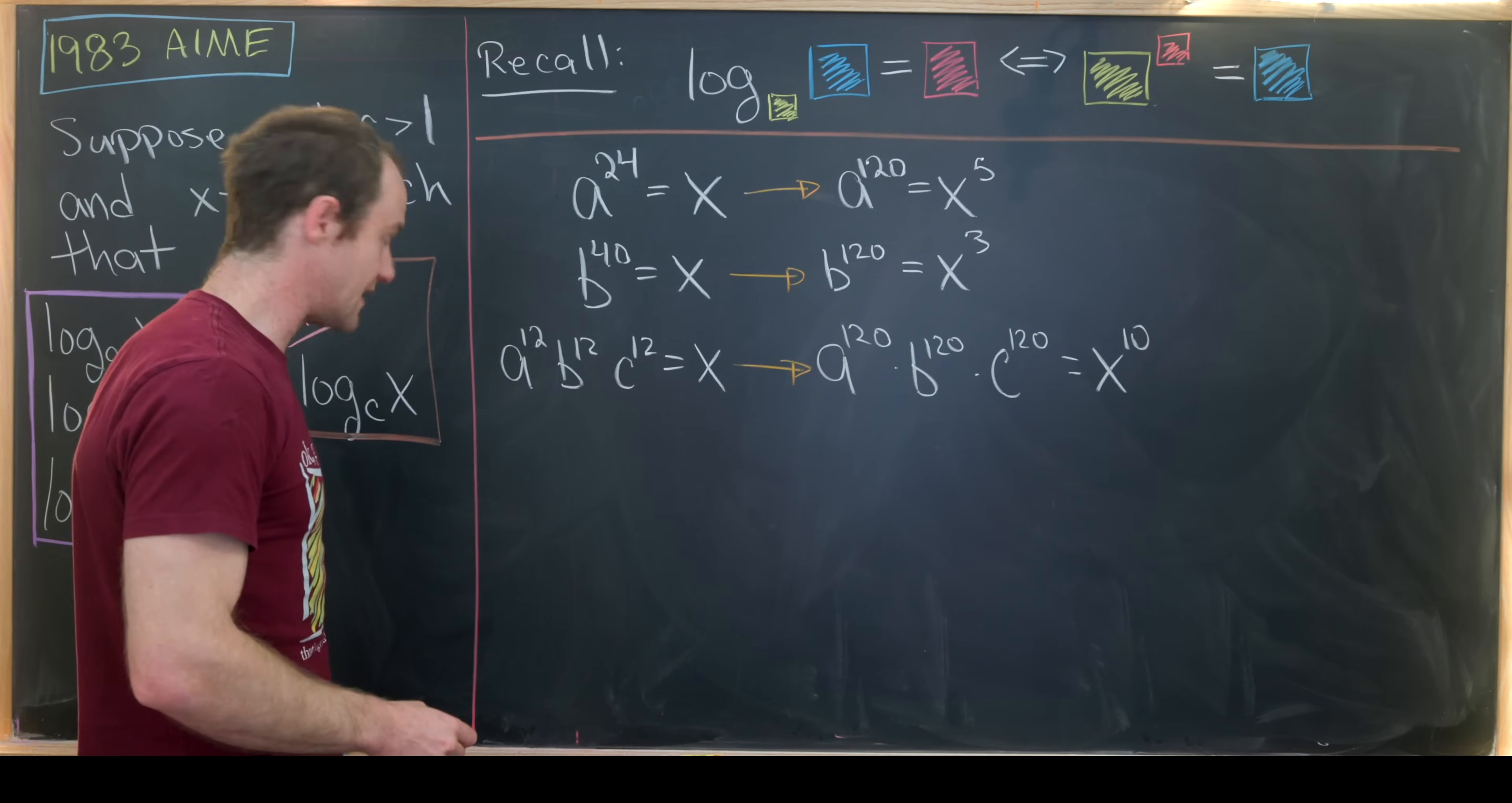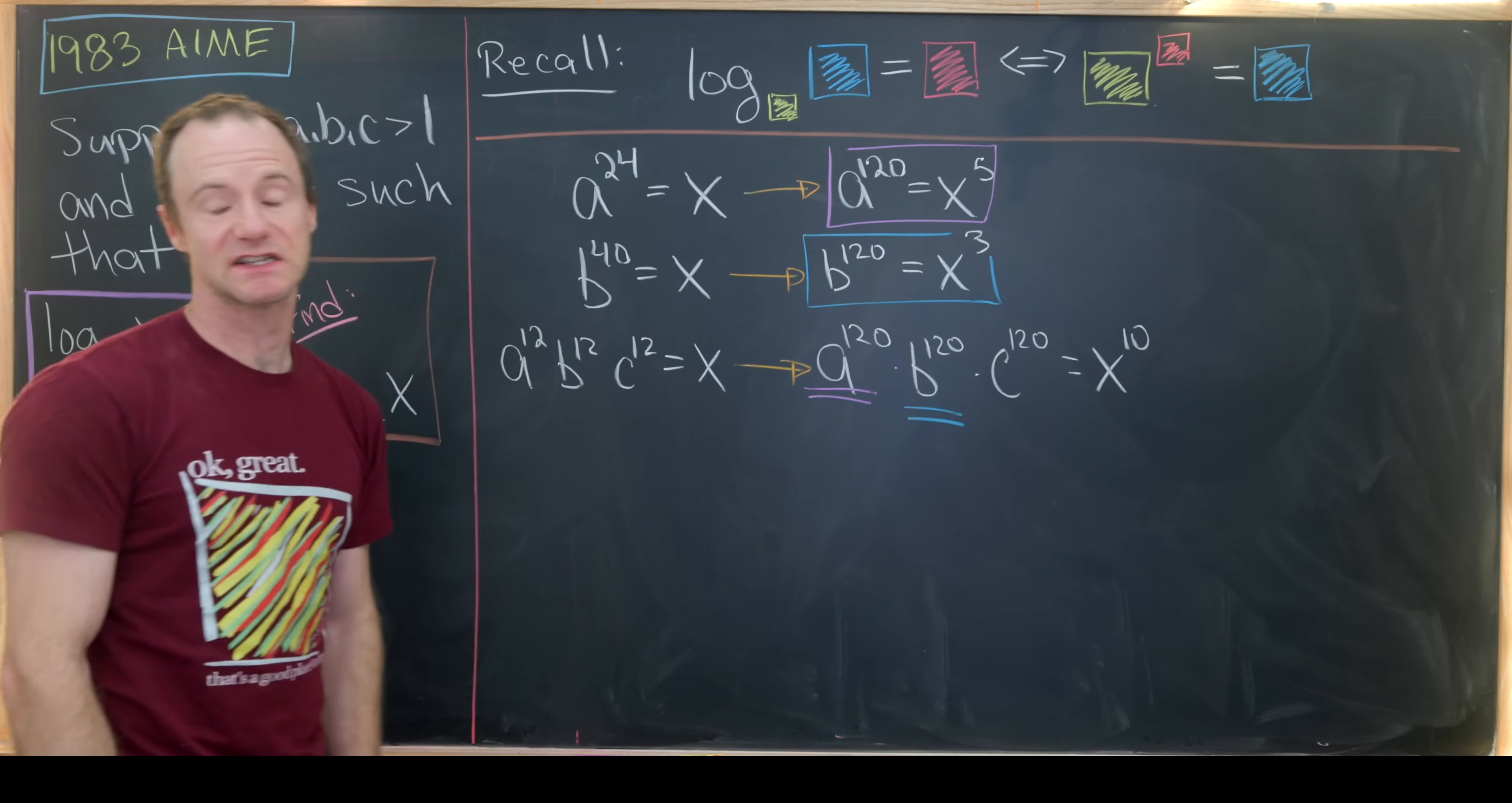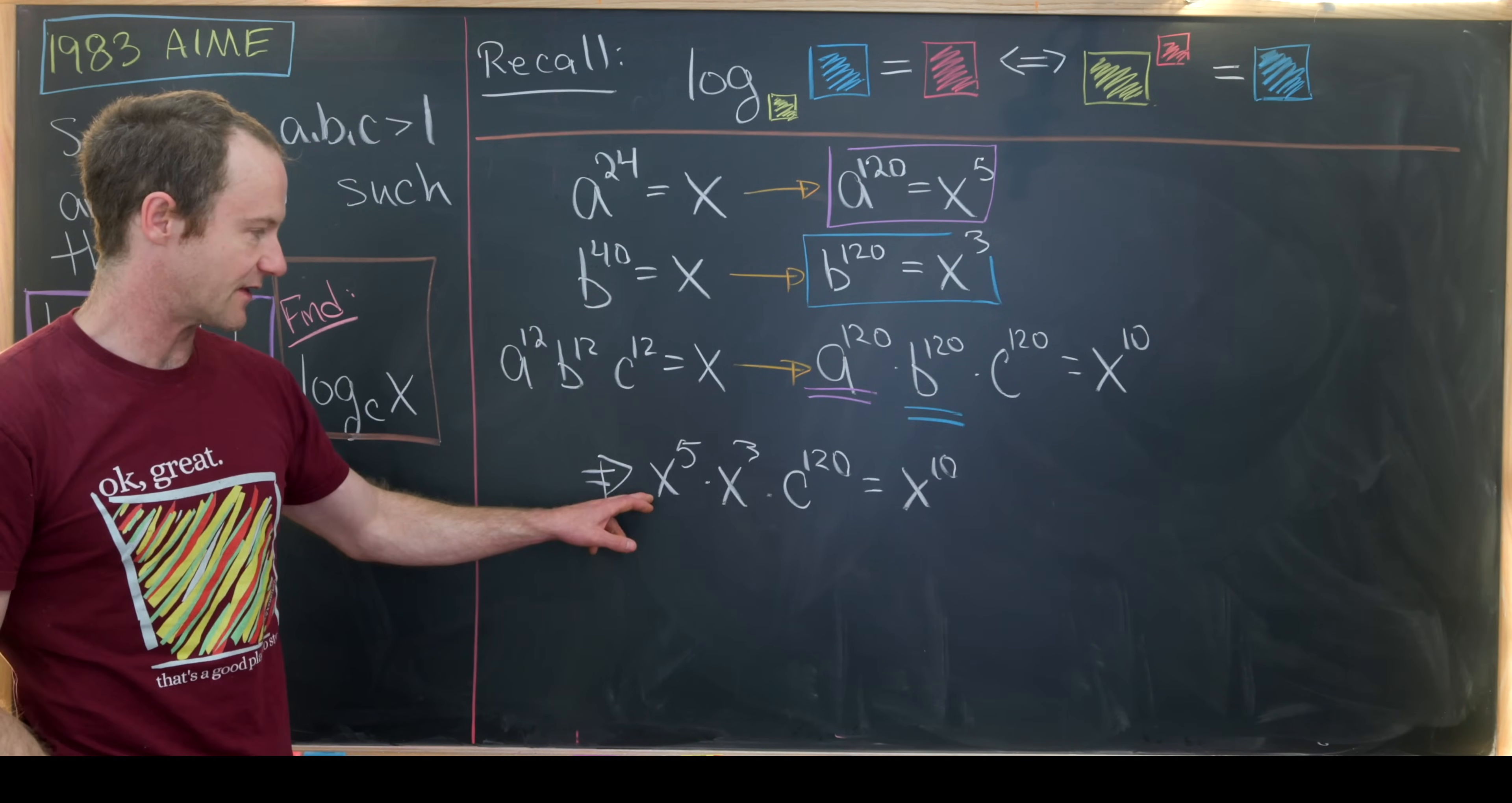Now we're in a really good spot. We can take this value for A to the 120 and substitute it in here. And then we can take this expression for B to the 120 and substitute it in here. That's going to leave us with X to the 5th times X cubed times C to the 120 equals X to the 10. Now putting this together, X to the 5 times X cubed is X to the 8.